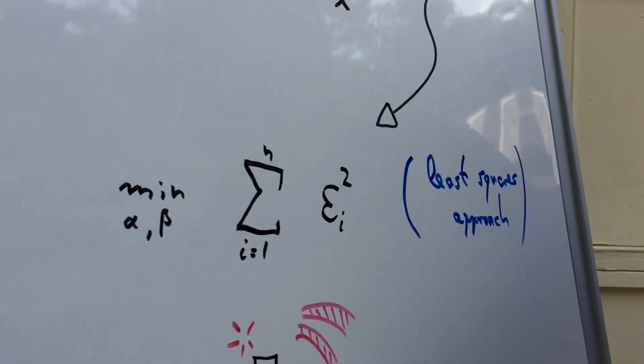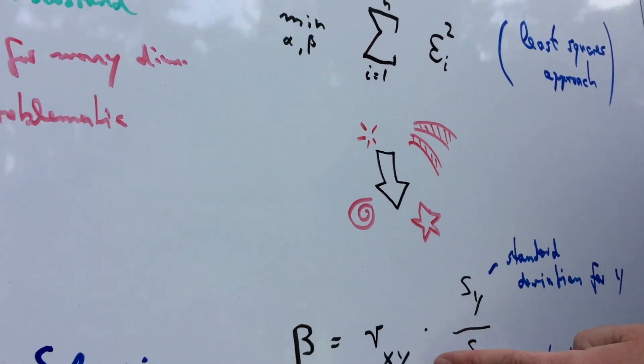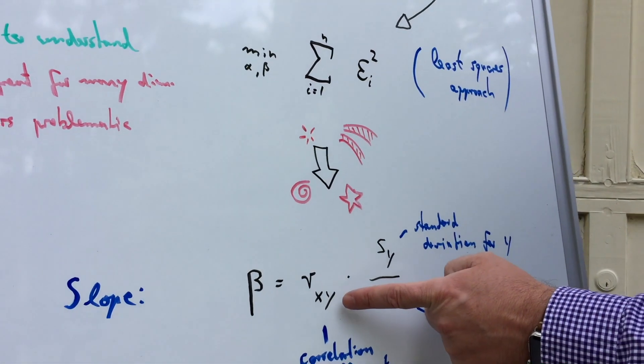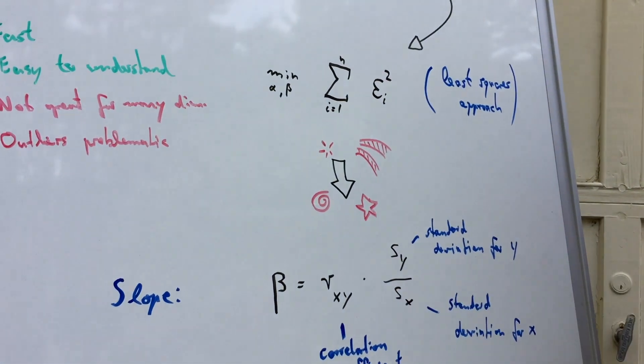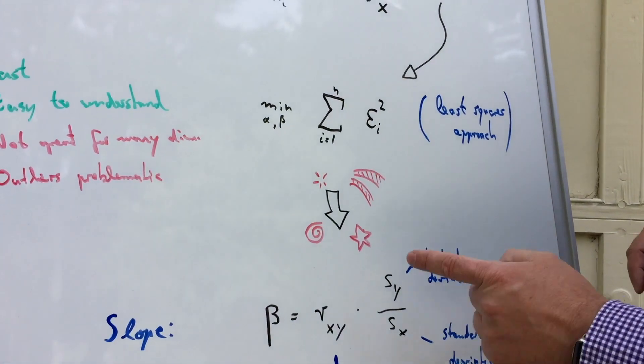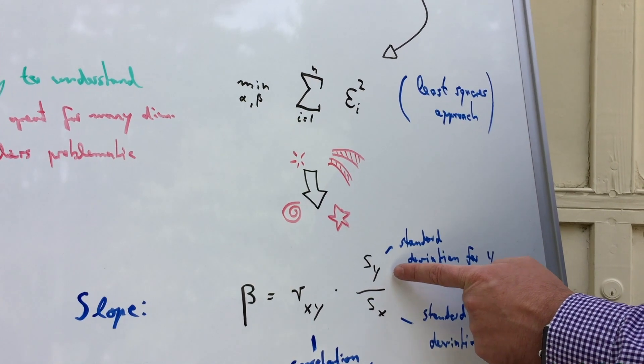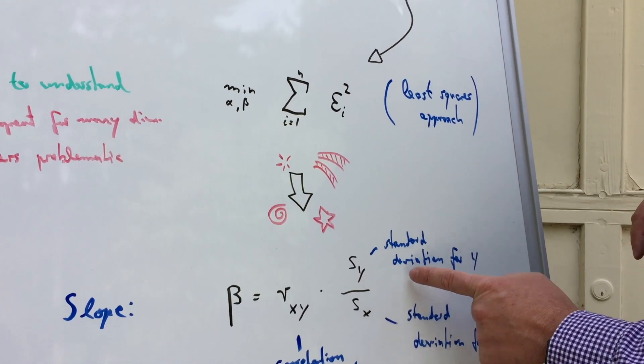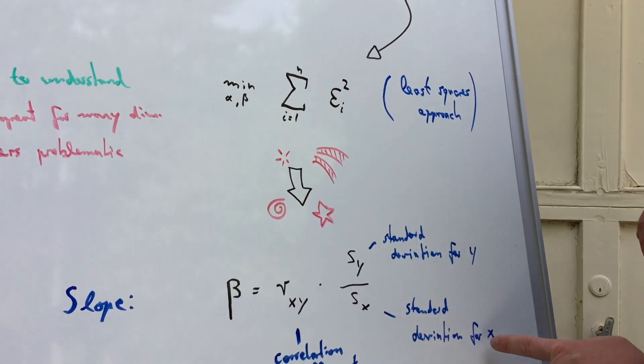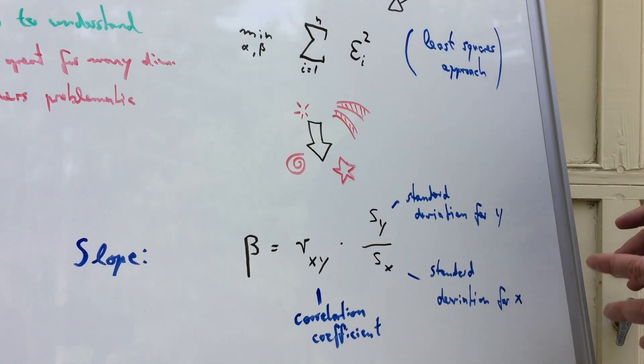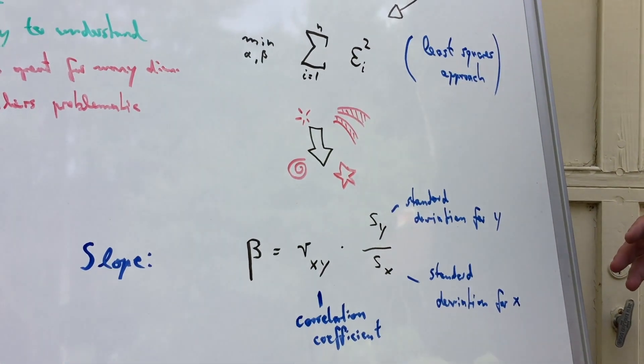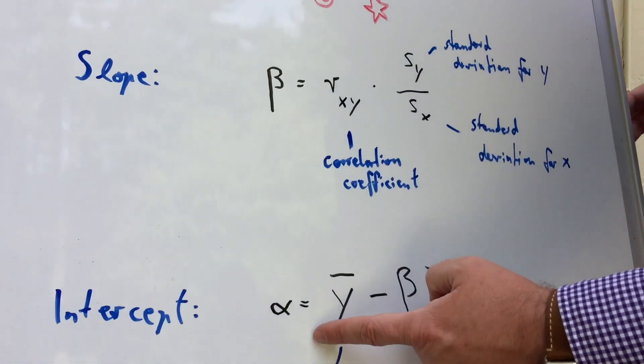So now we do some mathematical magic. So I'm not going into all the details there, but it's not super super difficult. And that actually delivers a very surprising result. So we can see that we can calculate the slope beta here just as the correlation coefficient between the values x and y. So that's just the regular Pearson correlation. And then we basically normalize this correlation by this factor here, which is just the standard deviation for y divided by the standard deviation for x.